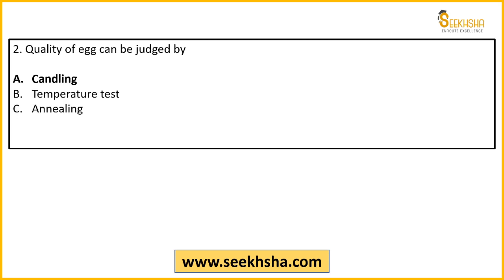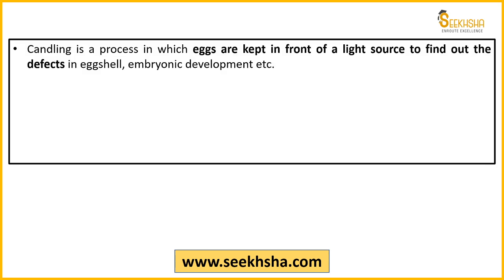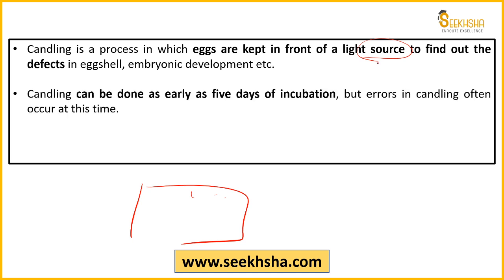The right answer is Option E — candling. What is candling? Inside candling, there is basically a chamber, and inside that chamber there is a light. Through this light, eggs are passed. By passing eggs through a light source, if there is any defect inside the egg — in the eggshell or whether the embryo has developed properly — that will become visible.